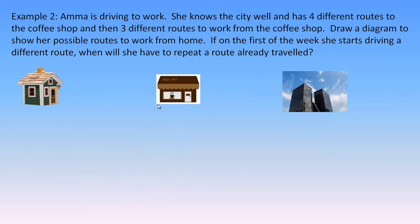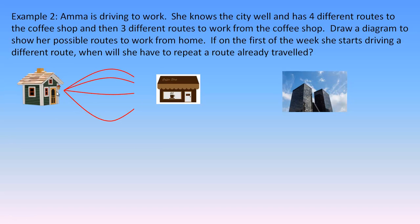Flipping over to the second example: Amra is driving to work. She knows the city well and she has four different routes to the coffee shop, and then three different routes from there to her workplace. We're supposed to draw a diagram to show her possible routes — not a tree diagram, just a diagram with visuals showing the path from her home all the way to her work. So this represents her home, and she has four different routes to the coffee shop, then three different routes from the coffee shop to her workplace.